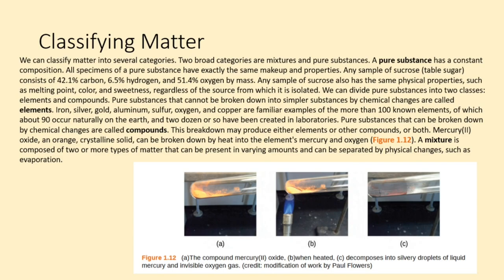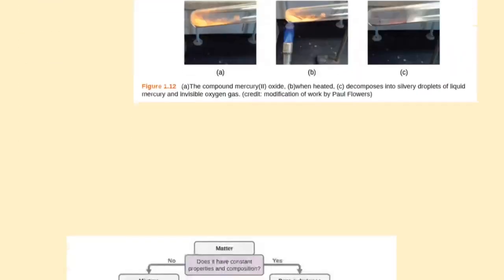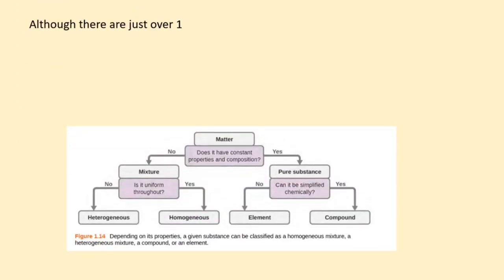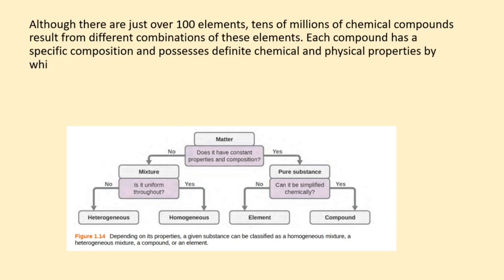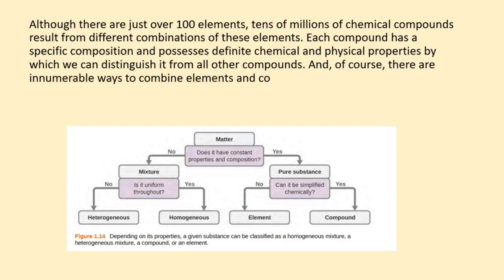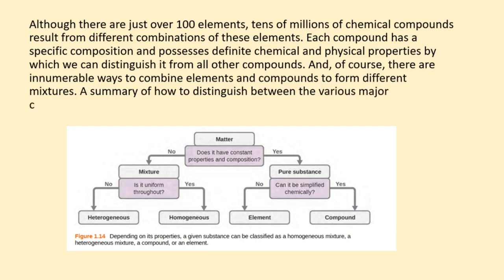A mixture is composed of two or more types of matter that can be present in varying amounts and can be separated by physical changes, such as evaporation. Although there are just over 100 elements, tens of millions of chemical compounds result from different combinations of these elements. Each compound has a specific composition and possesses definite chemical and physical properties by which we can distinguish it from all other compounds. And, of course, there are innumerable ways to combine elements and compounds to form different mixtures. A summary of how to distinguish between the various major classifications of matter is shown in figure 1.14.